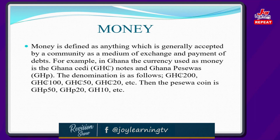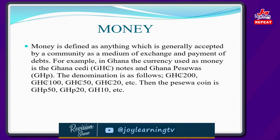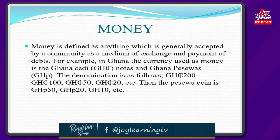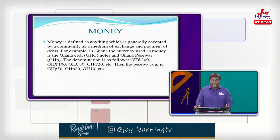Sometimes when you borrow something or buy something, you need to use money as an exchange for the debts. In Ghana, the currency used as money is the Ghana Cedi notes and the Ghana Pesewa. The denominations are as follows: the 200 Ghana Cedi, the 100 Ghana Cedi, the 50 Ghana Cedi, the 20 Ghana Cedi, and other notes. The Pesewa coins are the 50 Ghana Pesewa, the 20 Ghana Pesewa, and the 10 Ghana Pesewa.